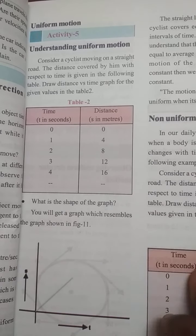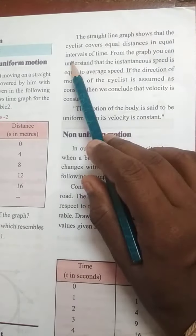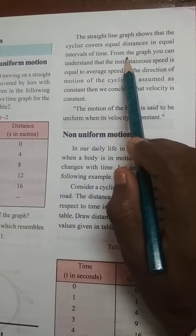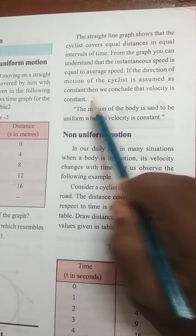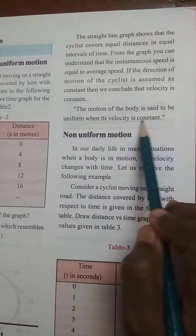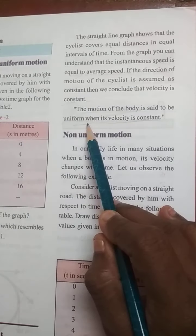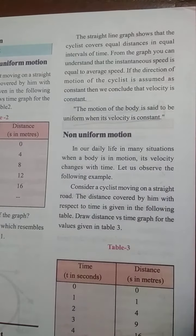The straight line graph shows that the cyclist covers equal distances in equal time intervals. From the graph, you can understand that the instantaneous speed is equal to the average speed. If the direction of motion of the cyclist is assumed as constant, then we conclude that the velocity is constant. The motion of the body is said to be uniform when its velocity is constant.